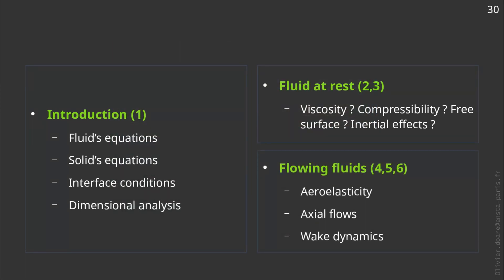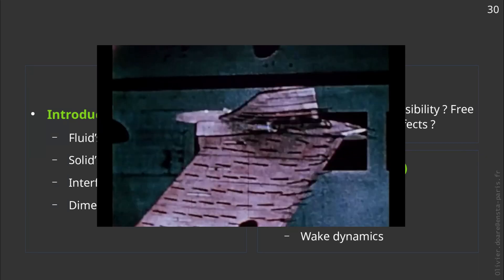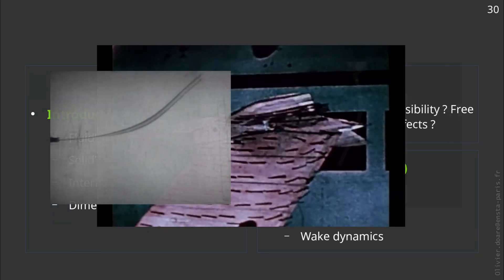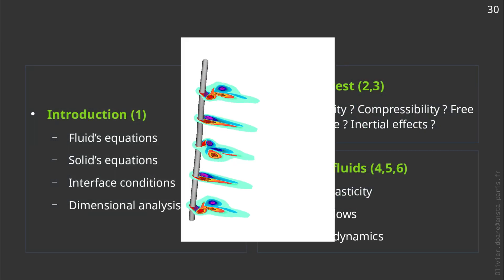Finally, in the third part, we will study the oscillations of structures in flows. Here again, different sub-classes will be addressed. Quasi-static aero-elasticity, pseudo-static aero-elasticity, structures in actual flow, interaction with the dynamics of wakes. We will highlight different phenomena such as the flutter of aircraft wings, the flutter of flags or pipes, or vortex-induced vibrations.